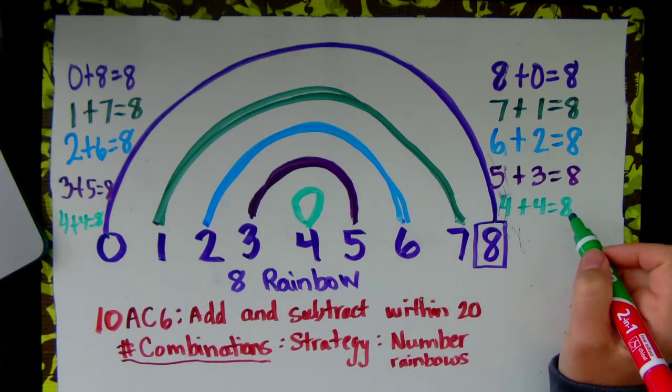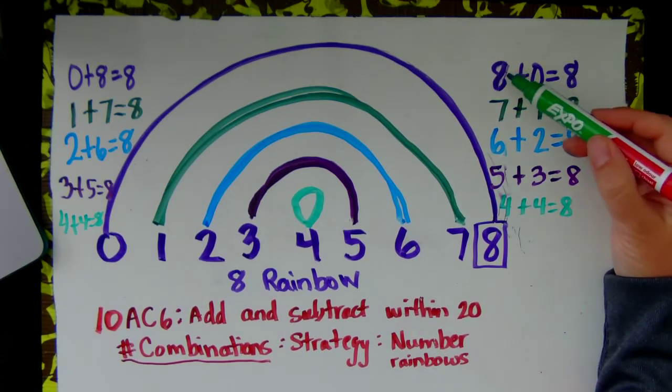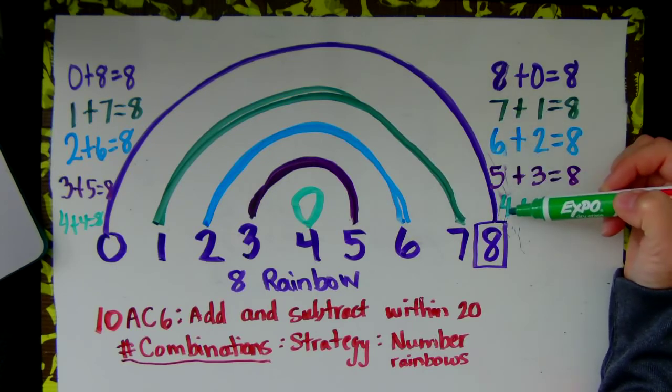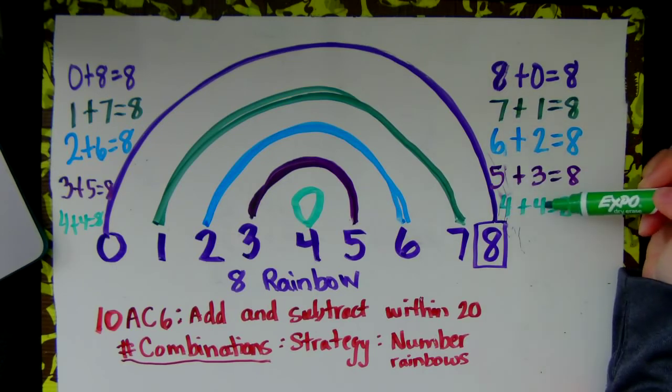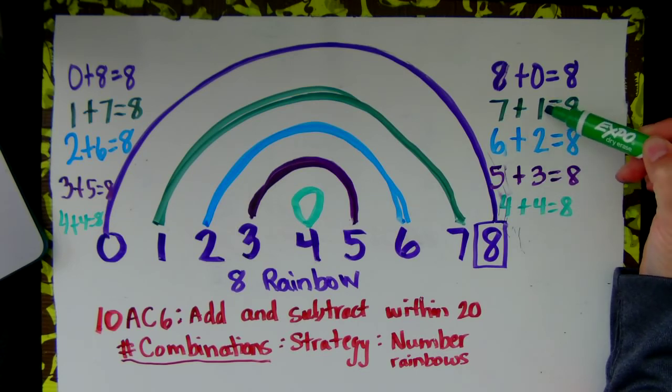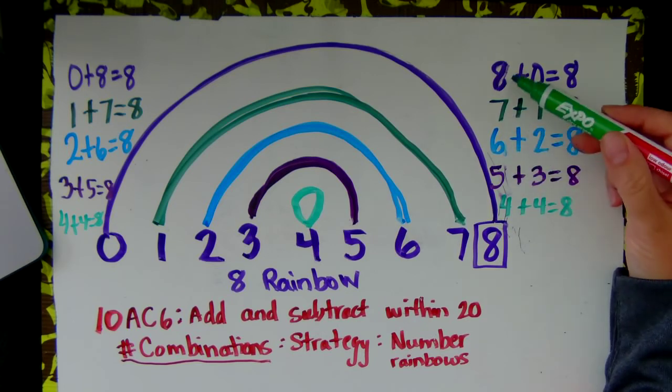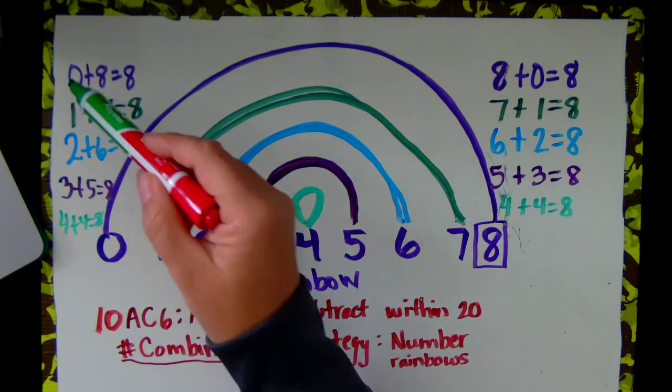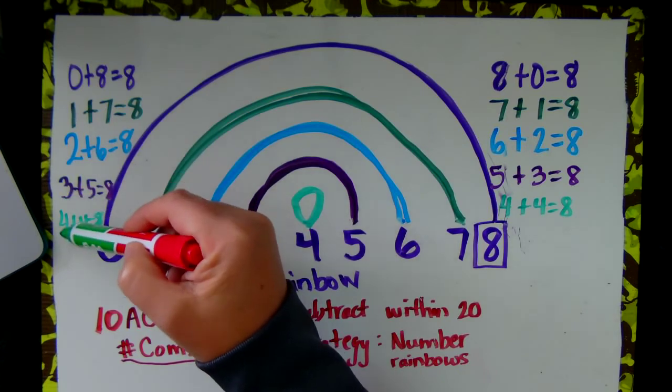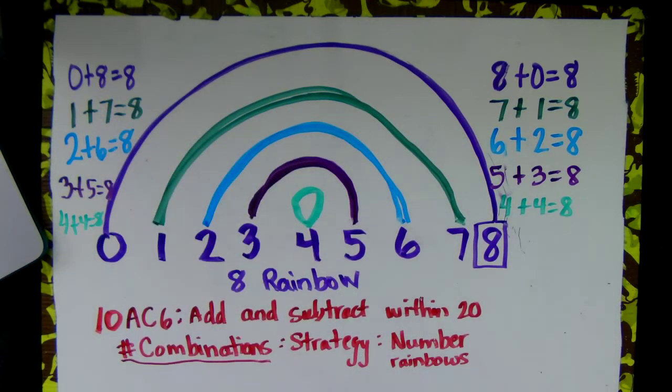Let's look at some patterns here. 8, 7, 6, 5, 4, 4, 3, 2, 1, 0. 0, 1, 2, 3, 4, 5, 6, 7, 8. 0, 1, 2, 3, 4, 5, 6, 7, 8. Look at those patterns.